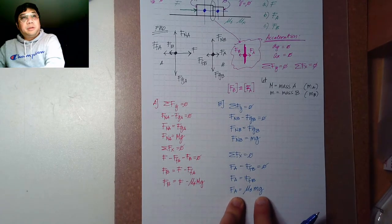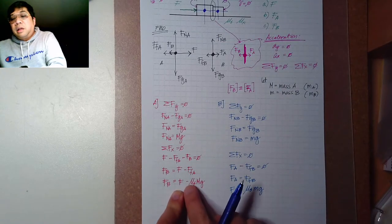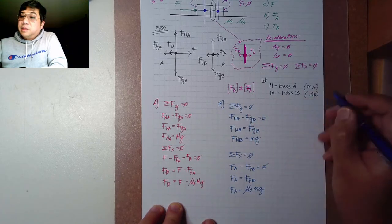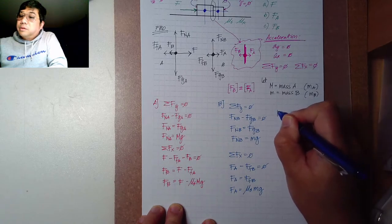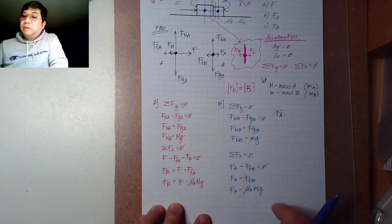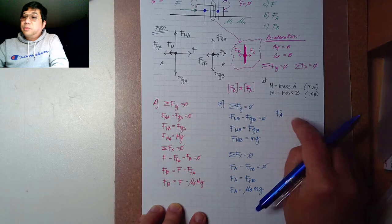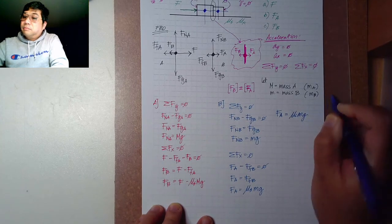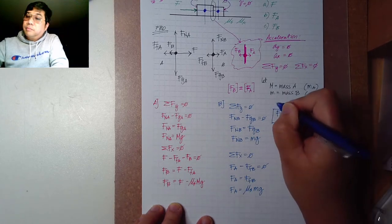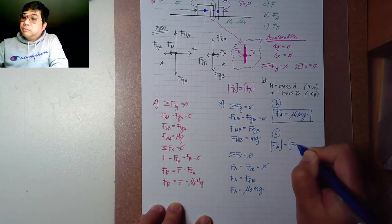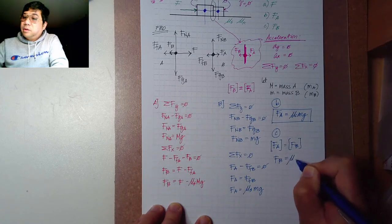Now we have a better answer in terms of m, g, and given information. F-of-A, the magnitude of the applied force from A to B, equals mu-s times m times g. This is the answer for part B.